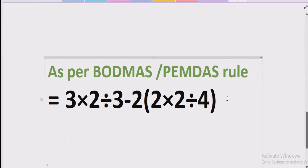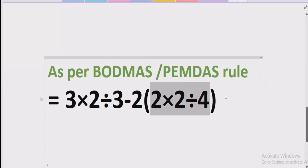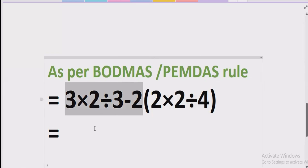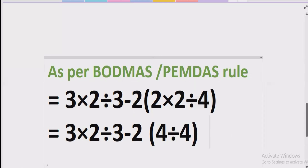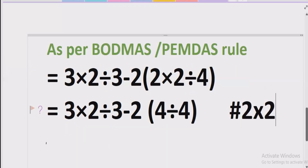Now let's move forward to solve the given expression. According to the BODMAS and PEMDAS rule, first of all we have to solve the bracket. Here we have a bracket which we will solve first, writing other parts as they are. Inside the bracket: 2 multiplied by 2 equals 4. We write 4, and the rest of the expression remains as it is. Then we also have divided by 4, written as it is.